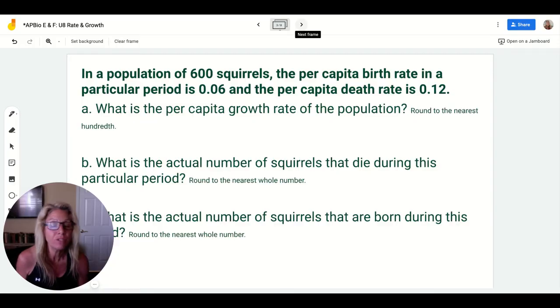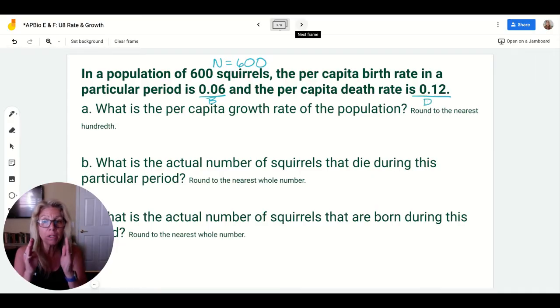Let's look at an example. In a population of 600 squirrels, so right away you should say N equals 600. The per capita birth rate is 0.06, so this is your B. The per capita death rate is 0.12. Right away you should be going, the birth rate is 0.06 but the death rate is 0.12, so there's more deaths per capita than births. What should happen to your population? It should go down.